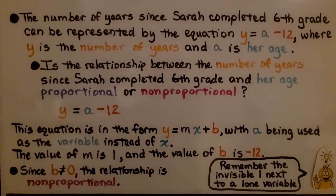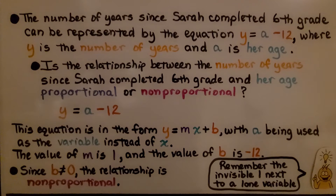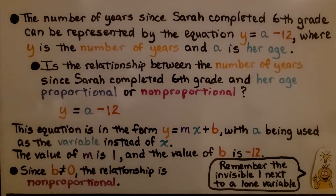The number of years since Sarah completed sixth grade can be represented by the equation y equals a minus 12, where y is the number of years and a is her current age. Is the relationship between the number of years since Sarah completed sixth grade and her age proportional or nonproportional?